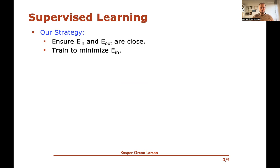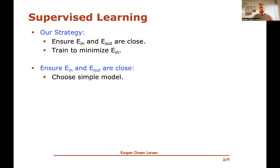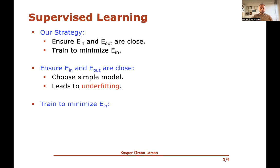To ensure that the in-sample error and out-sample error are close, the learning theory parts we saw so far told us to choose a simple model, because then given some amount of data we get a strong guarantee on the closeness of the in-sample error and out-sample error. But of course there's an issue with this. If you choose a too-simple model, then maybe there's no hypothesis in your hypothesis set that can even achieve a good in-sample error. And this is what we call underfitting — you chose a too-simple model for the application.